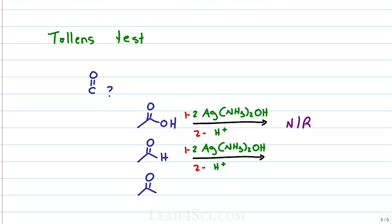If I react an aldehyde with a Tollens reagent, I will get silver solid as one of the products which is seen as a shiny silver mirror confirming the presence of the aldehyde.